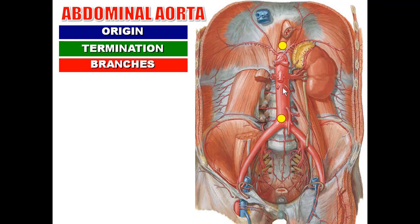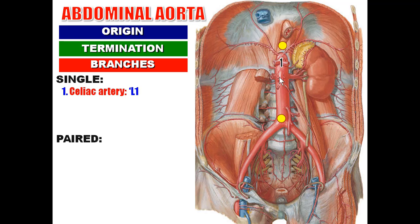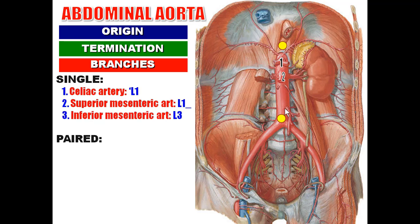Regarding the branches, I will organize them in three different ways. The first organization: single branches and paired branches. Single branches are midline branches — the celiac artery opposite the upper border of L1, the superior mesenteric artery opposite the lower border of L1, the inferior mesenteric artery opposite L3, and the median sacral artery opposite L4.